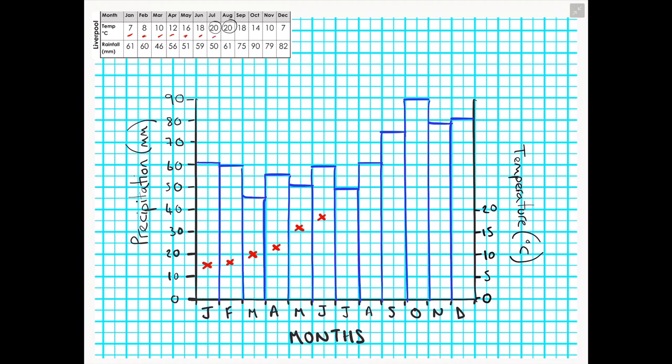You will also note here that my temperature data is actually going through or on top of my climate graph precipitation bars. This is absolutely fine.